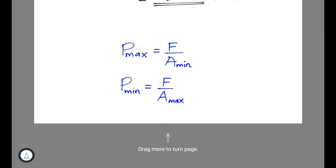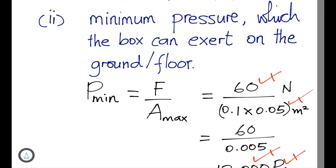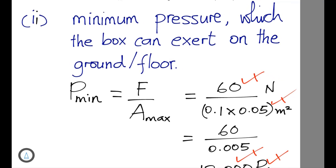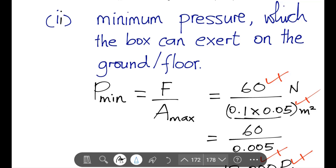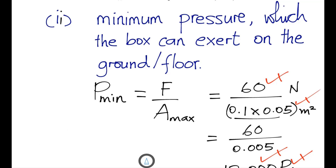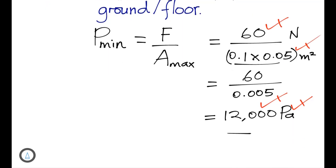For minimum pressure, use the formula: pressure = force ÷ maximum area. Substitute properly, showing all working. The area used must be the maximum area. The answer is 12,000 Pascals as the minimum pressure the box can exert on the floor.